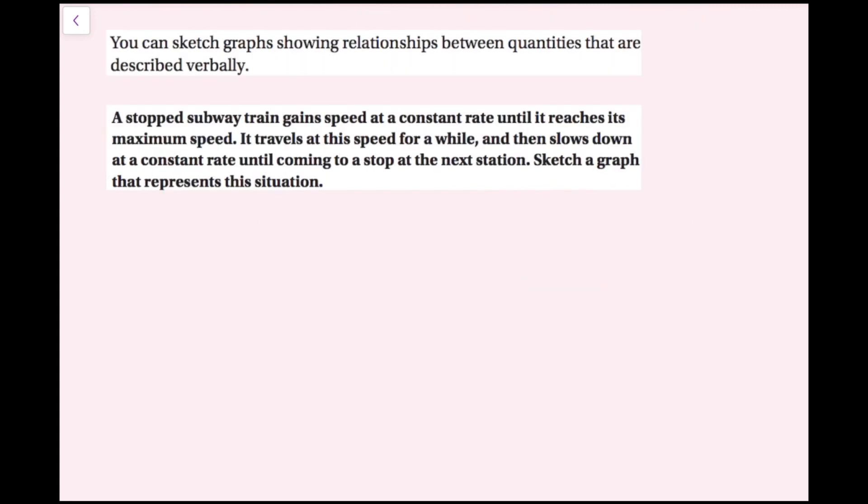You can sketch graphs showing relationships between quantities that are described verbally. In this example, a stopped subway train gains speed at a constant rate until it reaches maximum speed. It travels at this speed for a while, then slows down at a constant rate until coming to a stop at the next station. Sketch a graph that represents this situation.